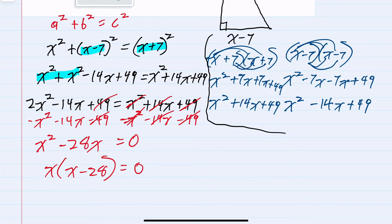When I have two factors multiplying to be zero, either the first one is equal to zero or the second one x minus 28 is equal to zero. To solve here for x I would add 28 to both sides. x equals 28.